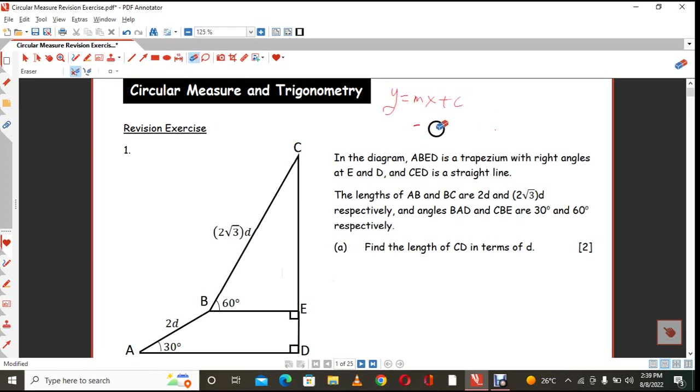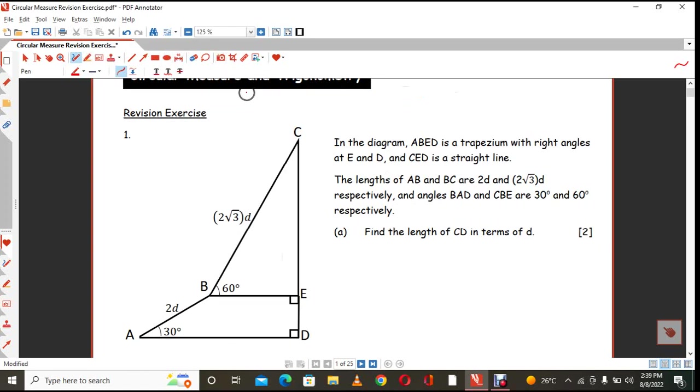Anyway, let's go directly into it. So we have here a question. It says that in the diagram, ABED is a trapezium with right angles at E and at D and CED is a straight line, very important.